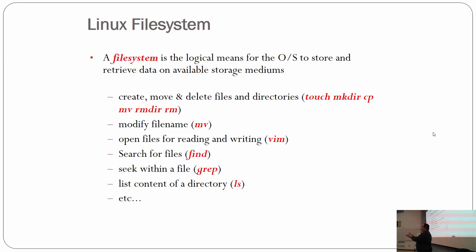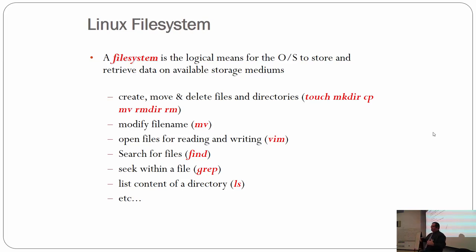Basically, a file system is the logical layer that allows a human to interact with the raw data on the disk — the ones and zeros on the spinning disk or contained in some chip of memory like a flash drive. You can't manipulate them directly, but a file system allows you to touch them. The file system allows you to create, move, and delete files and directories, modify them, open them for reading and writing, searching, seeking — that kind of stuff.